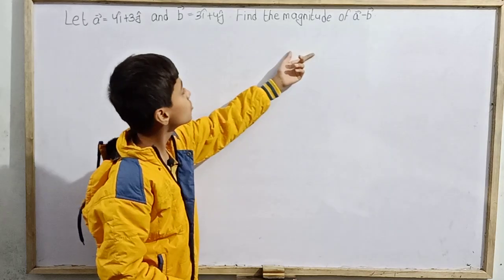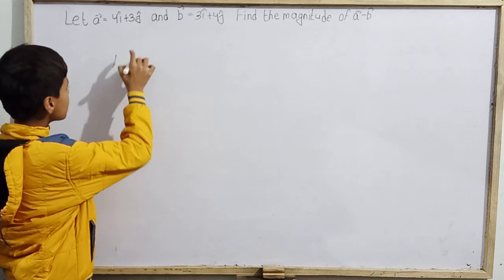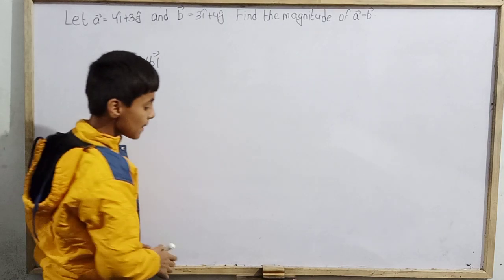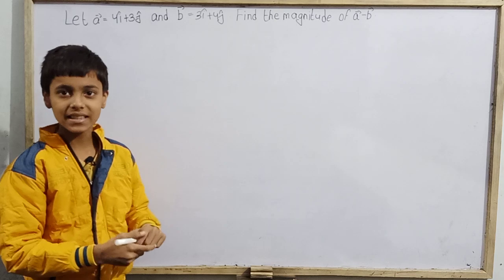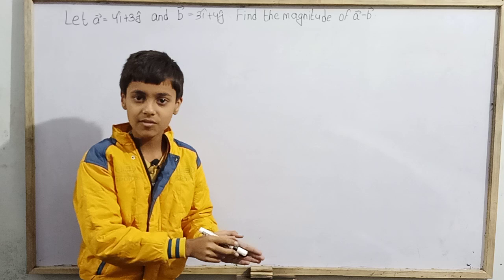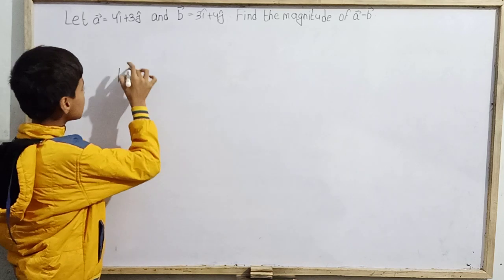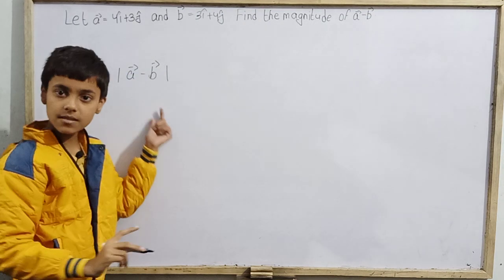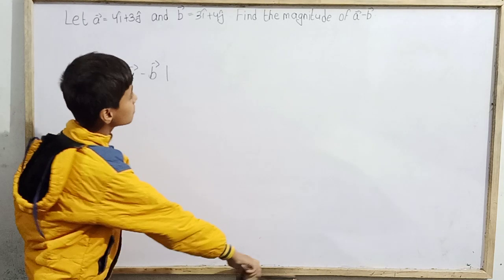First, make sure you do not compute the magnitude of vector A minus the magnitude of vector B separately. That would be wrong. There is a big difference — just like A plus B whole square is different from A squared plus B squared. We must first compute the vector A minus vector B, and then take the magnitude of the result.